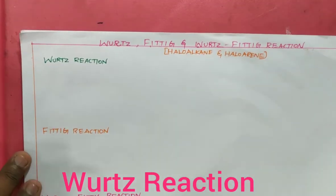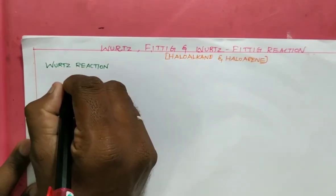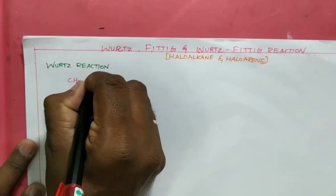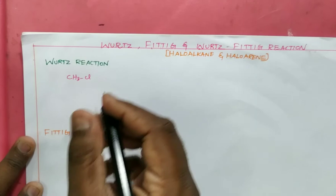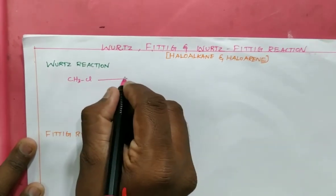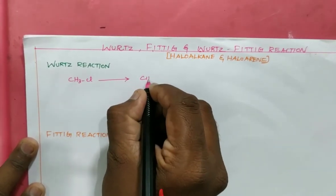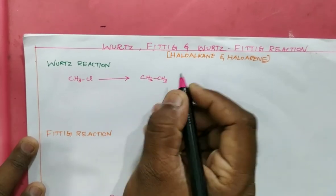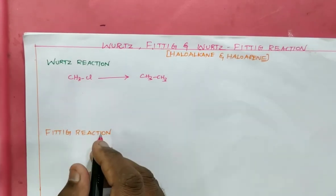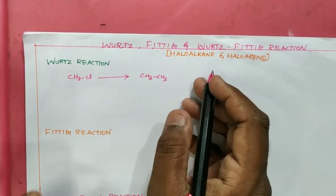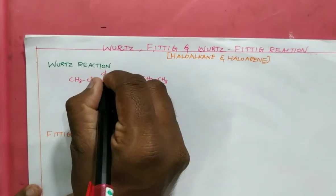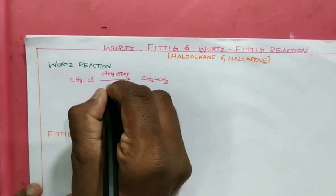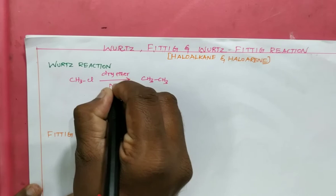What is the Wurtz reaction? Usually alkyl halides — for example, CH3Cl — can be converted into higher alkanes in the presence of dry ether with metallic sodium.